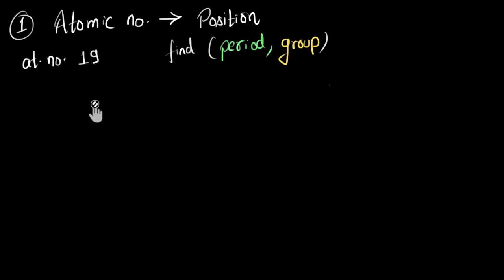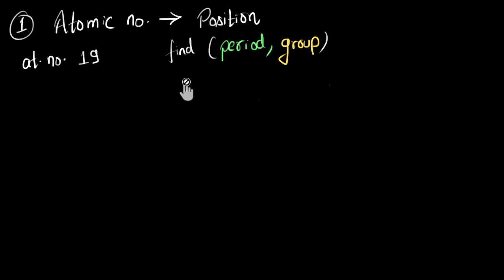We have been given an element whose atomic number is 19, and we need to find out its position on the periodic table — basically, which period number and which group number it belongs to.